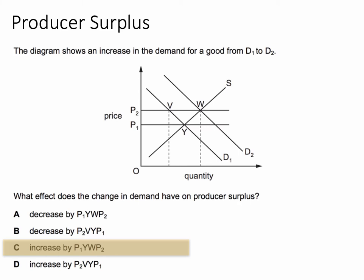Let's think about why that's the case. Producer surplus is the difference between the price the producer is willing to supply their product for and the price they actually get, and it's shown by the area above the supply curve and below the market price.